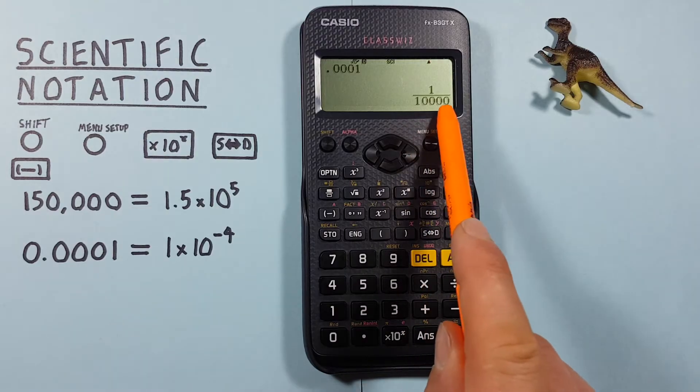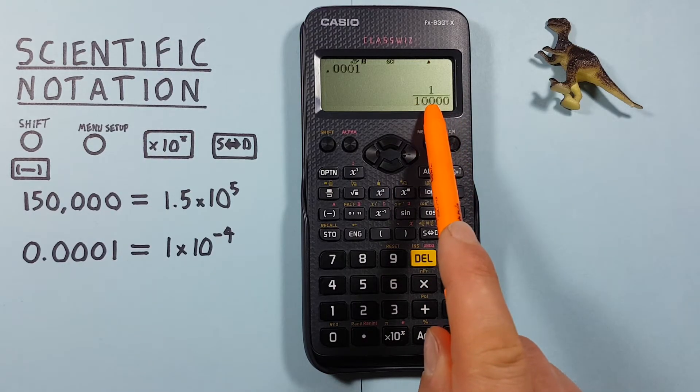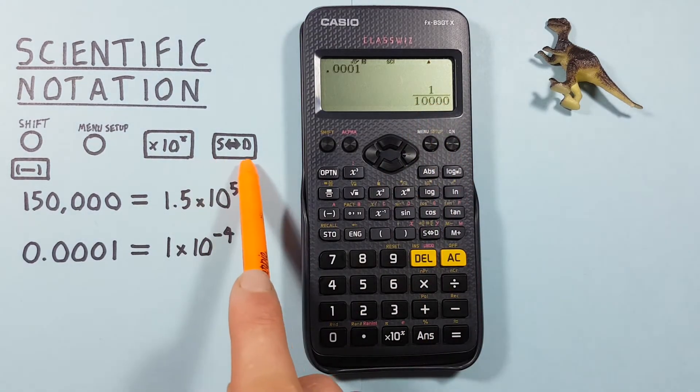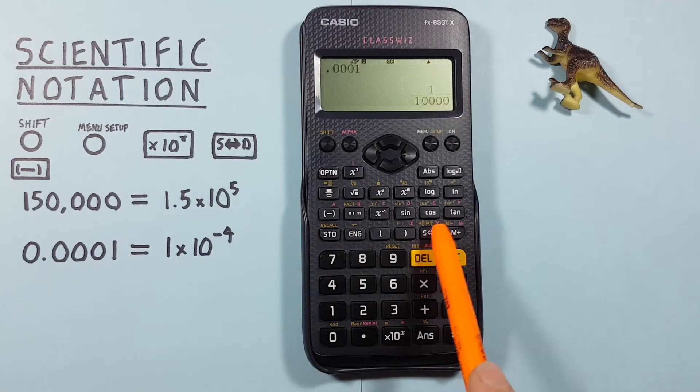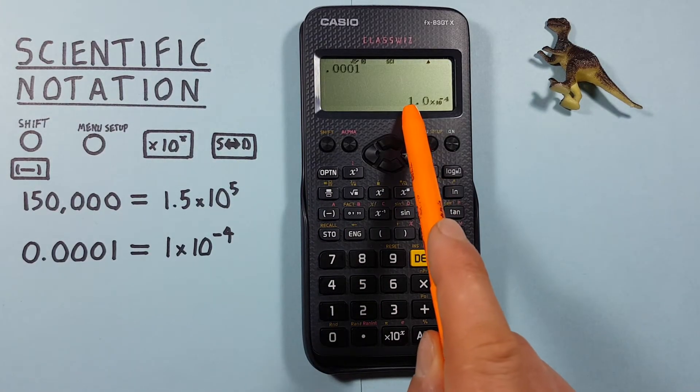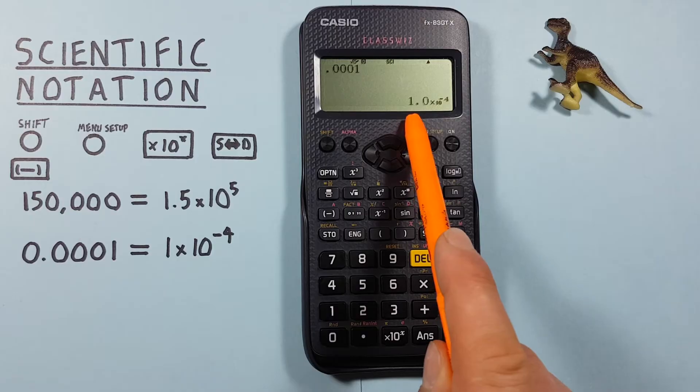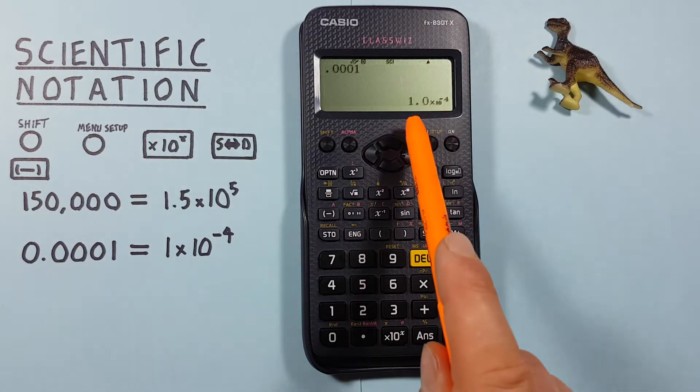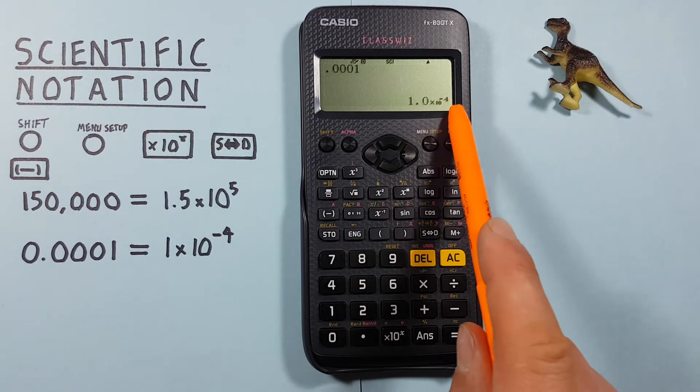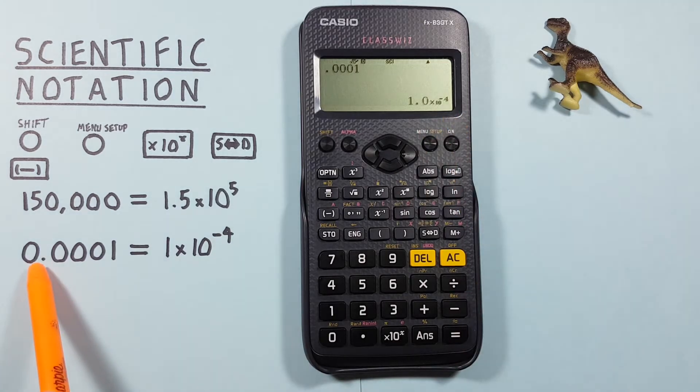This calculator likes to give us fractions, so you might get this, but if you press the conversion key or S to D key, you'll see it'll change to scientific notation, which for this one is 1 times 10 to the power of negative 4. That negative means the decimal moves backwards.